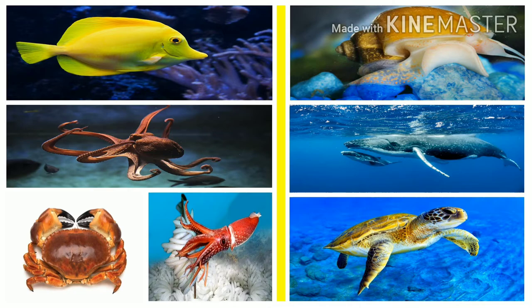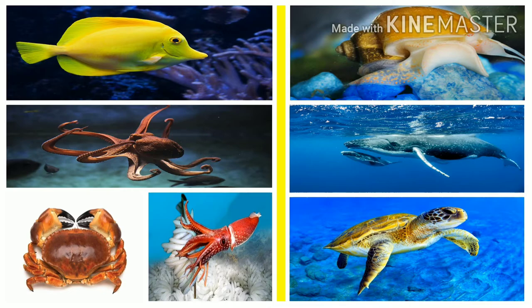Aquatic mammals give birth to young ones; they do not lay eggs like fish. The young ones are known as calves. Aquatic mammals feed their milk to their young ones. Crabs are generally covered with a thick exoskeleton composed primarily of highly mineralized chitin and armed with a single pair of claws. Squid have very good eyesight and can even see in color. The two tentacles are specially adapted for feeding and used to grab prey. To protect themselves, squid release black ink which darkens and clouds the water, making it difficult for predators to see them.